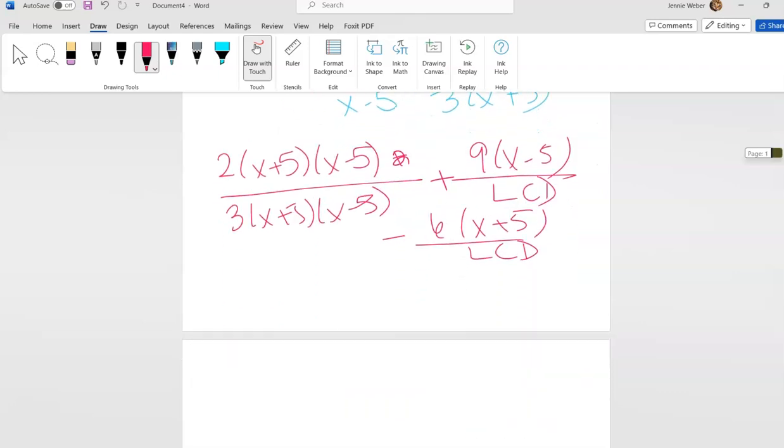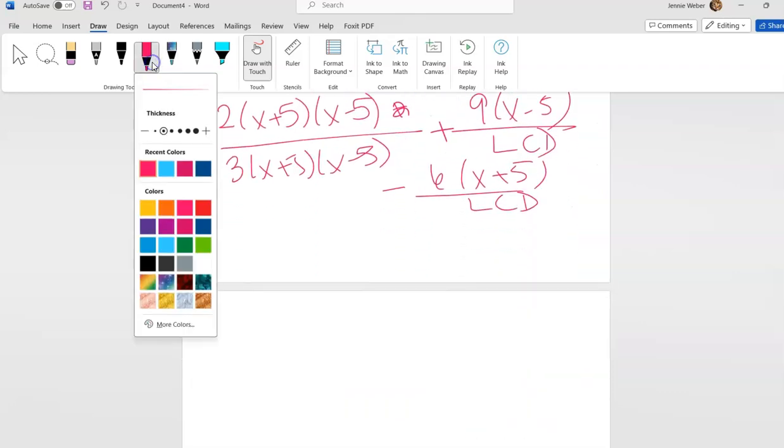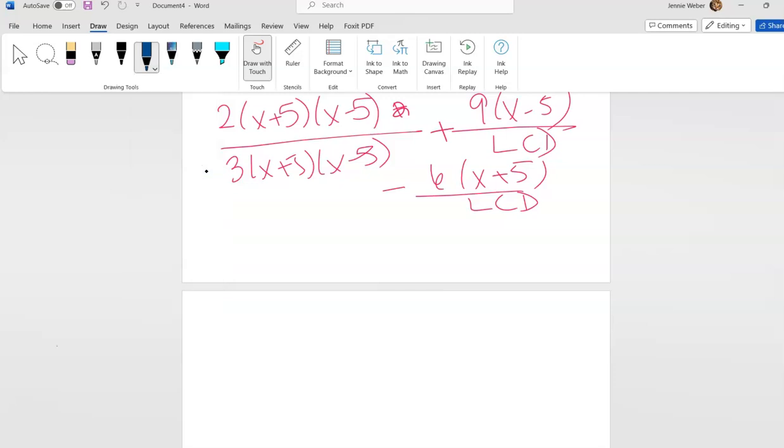Now our next step is to combine these. So I'm going to have 2, and I'm going to FOIL here. I'm going to get x squared. Oh, that middle is going to fall out, that's nice. Minus 25, plus 9x minus 45, minus 6(x+5), all over this big LCD.